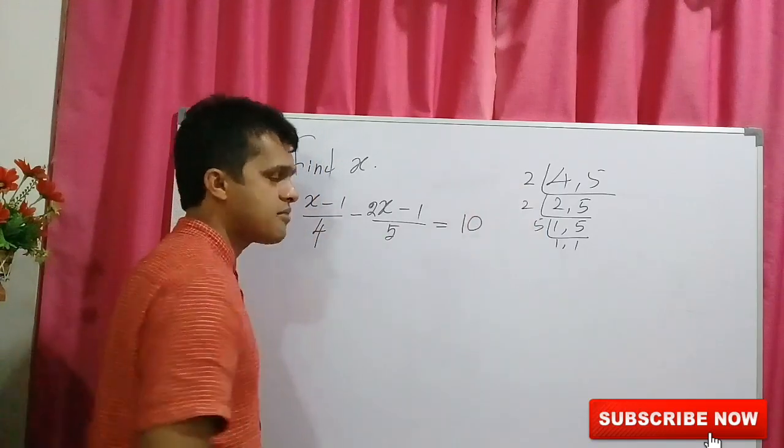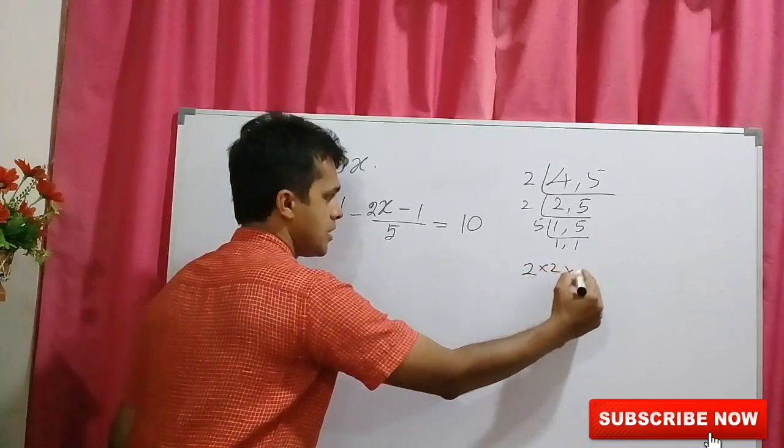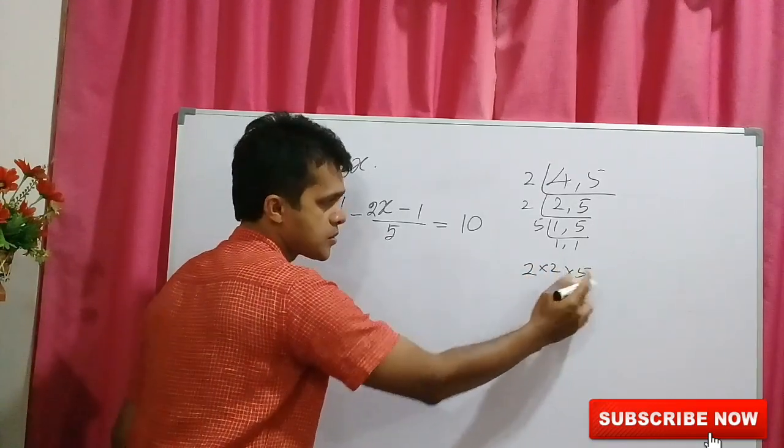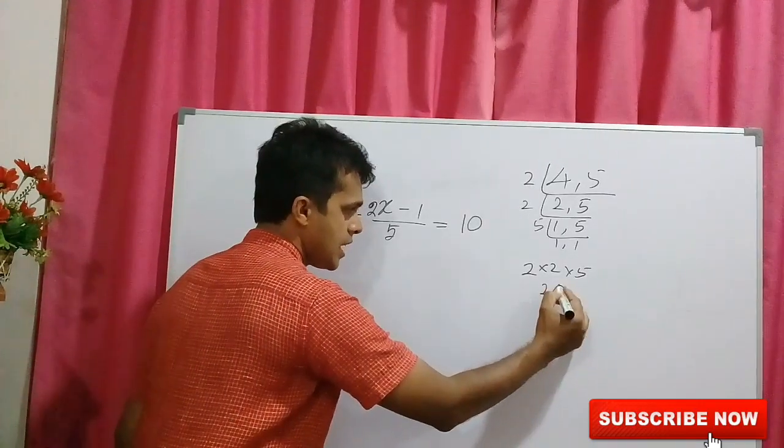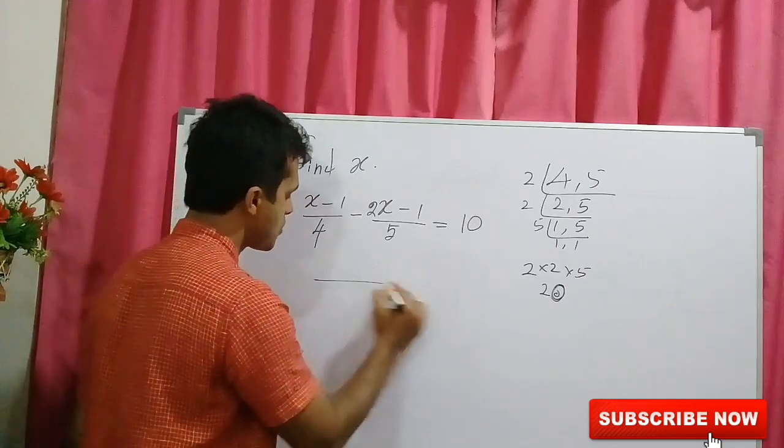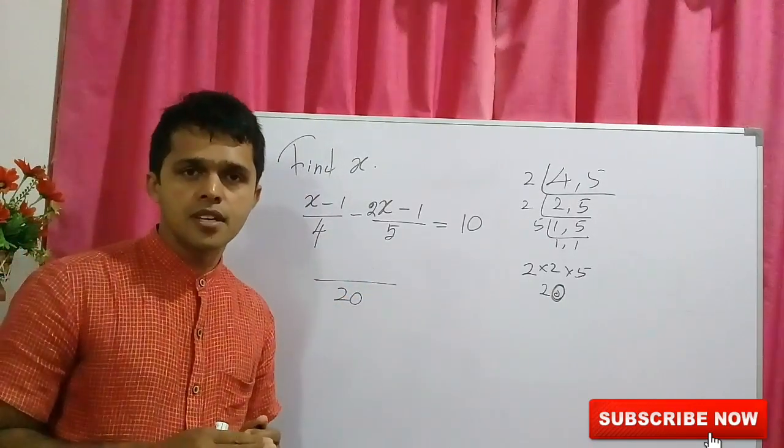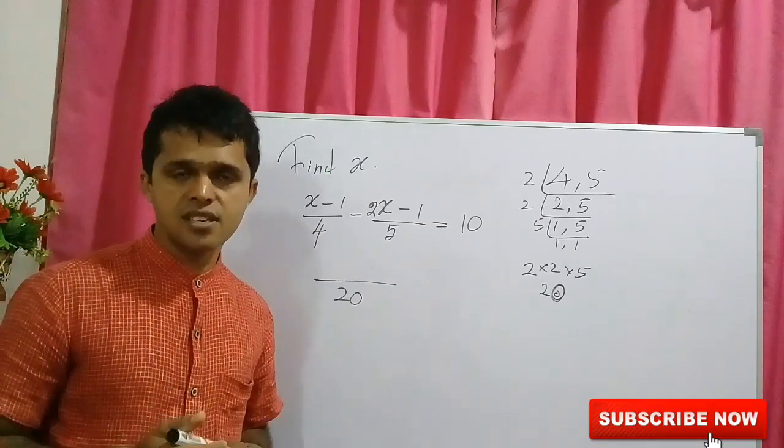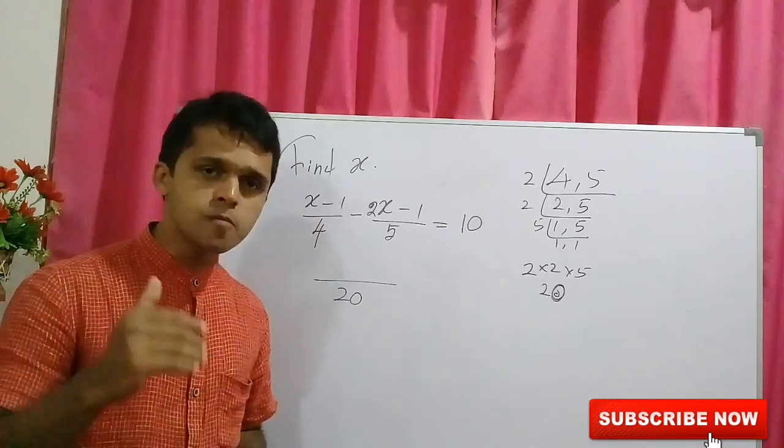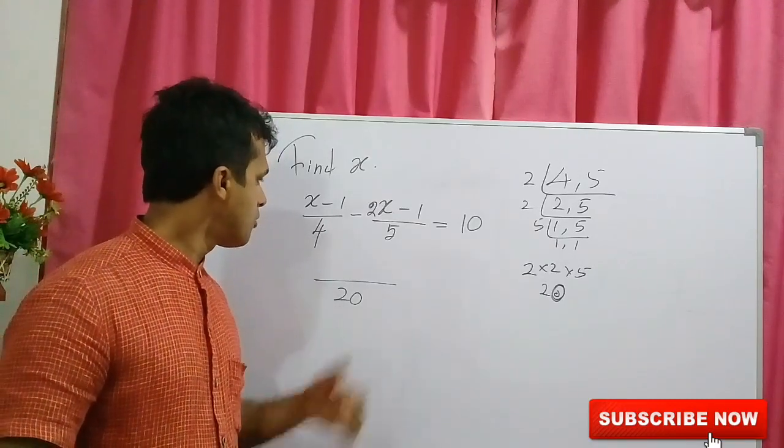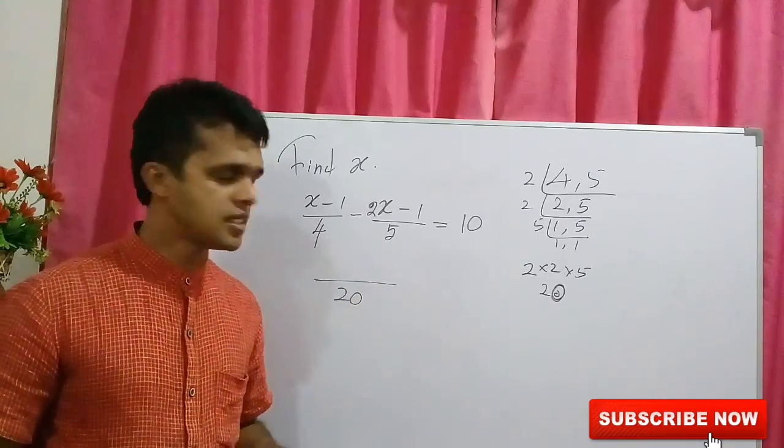Now take the product, LCM of 4 and 5. 2 times 2 times 5. You know that 2 times 2 is 4, 4 times 5 is 20. The LCM of 4 and 5 is 20. That is the first step of finding the value of x. When you find the value of x, firstly it should be taken the LCM of 4 and 5. That is 20.